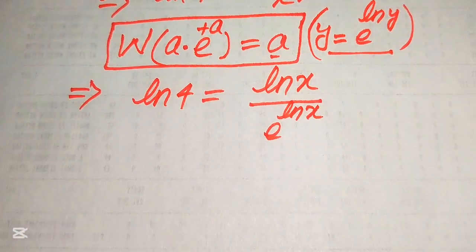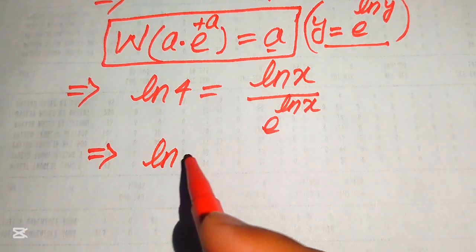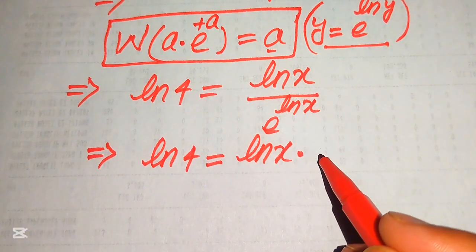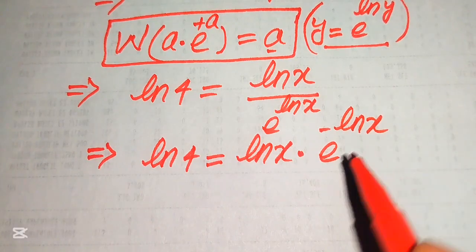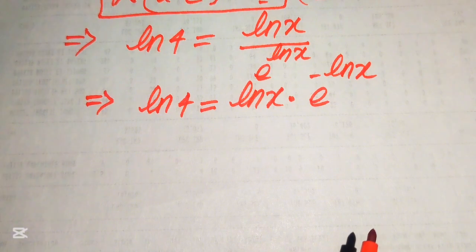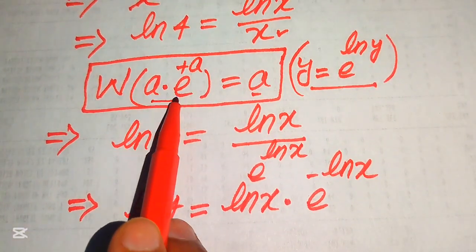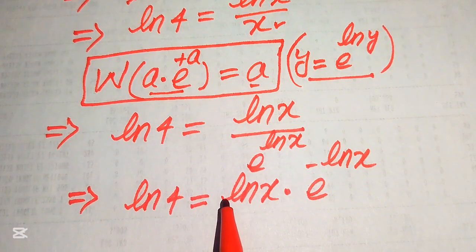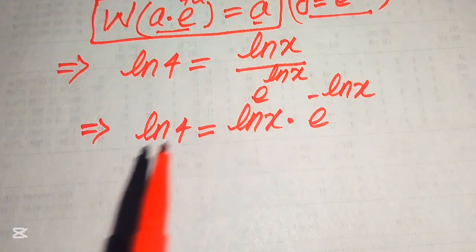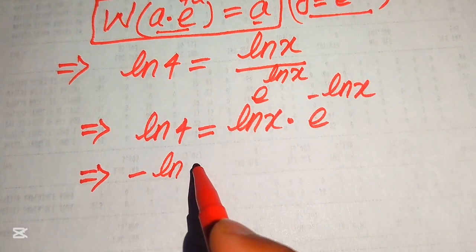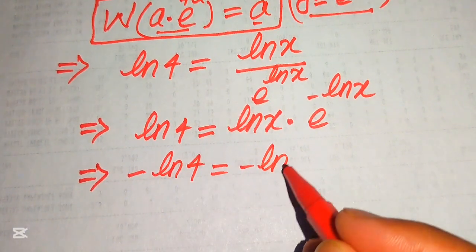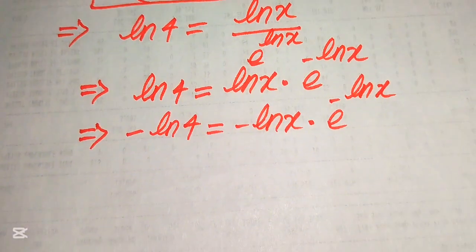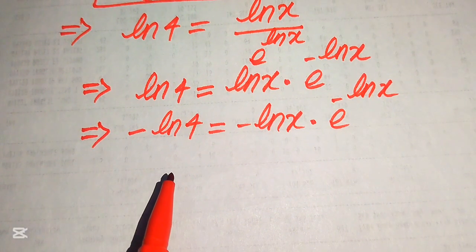In the next step we move the denominator to the exponent, writing it as log 4 equals log x times e to the power of minus log x. The exponent of e is minus log x, but we need the form with a matching term, so we multiply both sides by minus 1, giving minus log 4 equals minus log x times e to the power of minus log x.